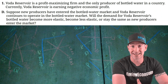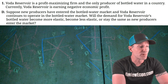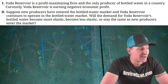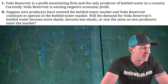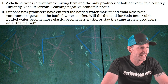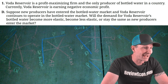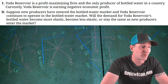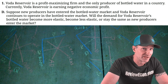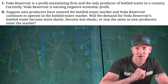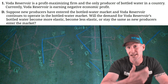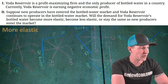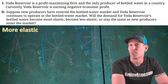On to part D: suppose new producers have entered the bottled water market while Voda Reservoir continues to operate. Will the demand for Voda Reservoir's bottled water become more elastic, less elastic, or stay the same? As new producers enter the market, they'll be offering substitutes, and the more substitutes there are, the more elastic demand will be. So the answer is more elastic.